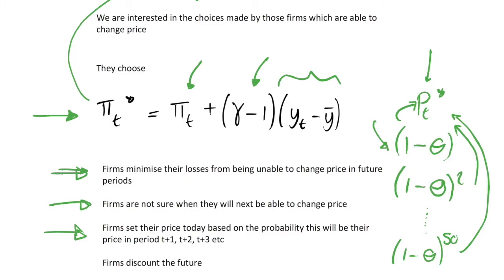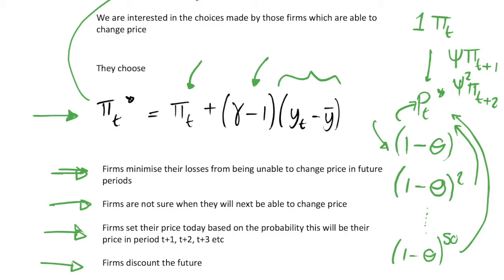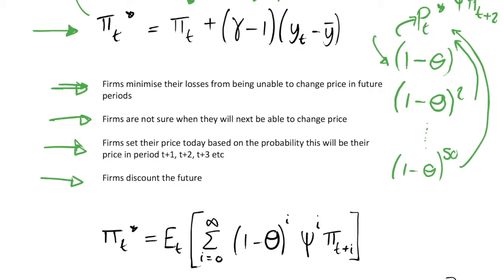Firms set the price today based on the probability that this is their price in all future periods. We also have firms discounting the future: profits today are weighted by discount factor 1, whereas profits in the future are discounted by psi, and in period t plus 2 by psi squared, and so on. We discount future profits to some extent — individuals tend to do this in reality and firms do as well, so it's a reasonable assumption.